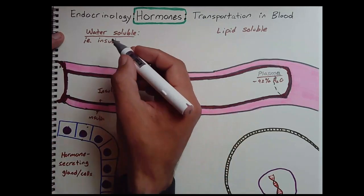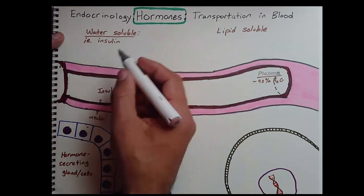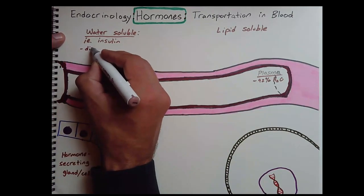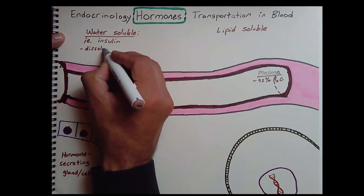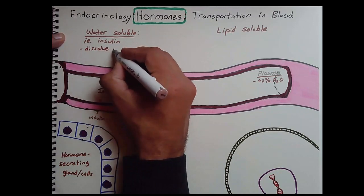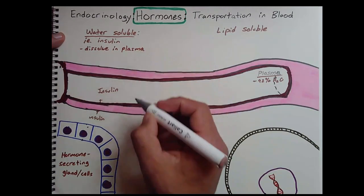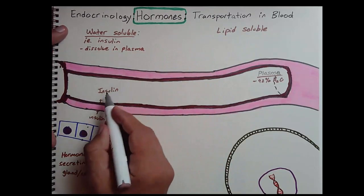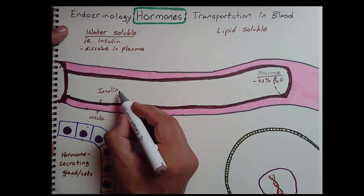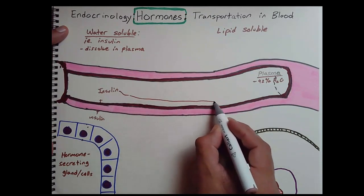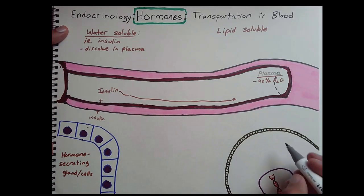So any water-soluble hormones—insulin, growth hormone, ADH, epinephrine, norepinephrine—these are all going to dissolve in the plasma. We'll come back to something that's important about that. But once it dissolves in the plasma, insulin literally is just going to go along with that plasma, get transported to its target cells.